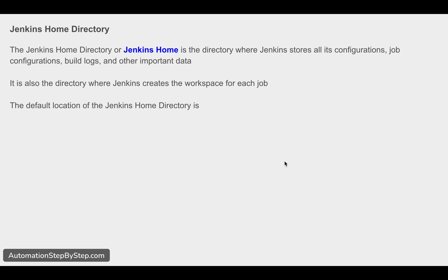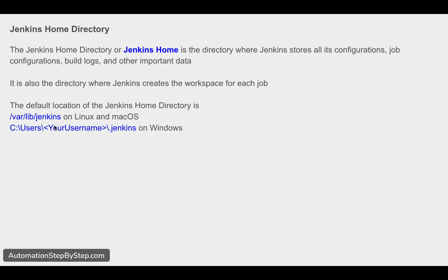Now the default location of this directory is /var/lib/jenkins if you are on a Linux or Mac system. And if you are using Windows, you will find it in your C drive under Users, then whatever your username is — like in my case it was 'administrator' — and that dot Jenkins folder. So this is the location of the Jenkins home directory on Linux, Mac, and Windows.